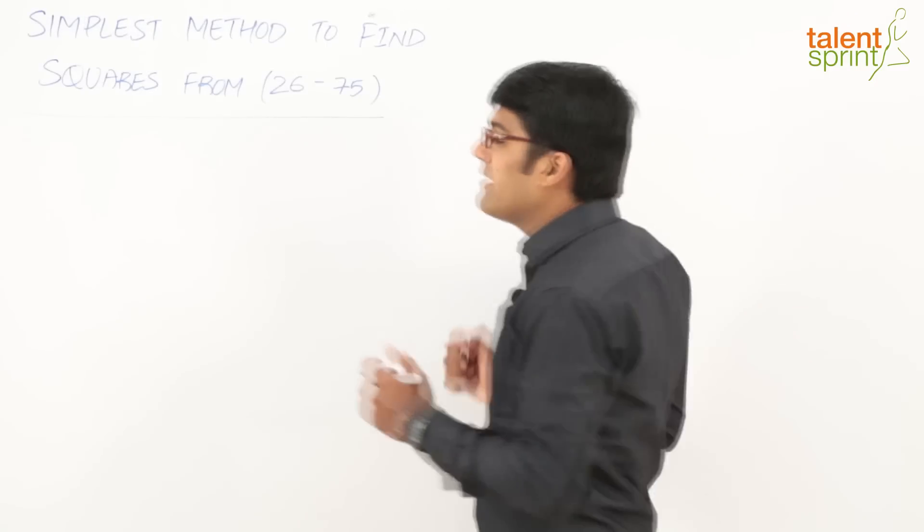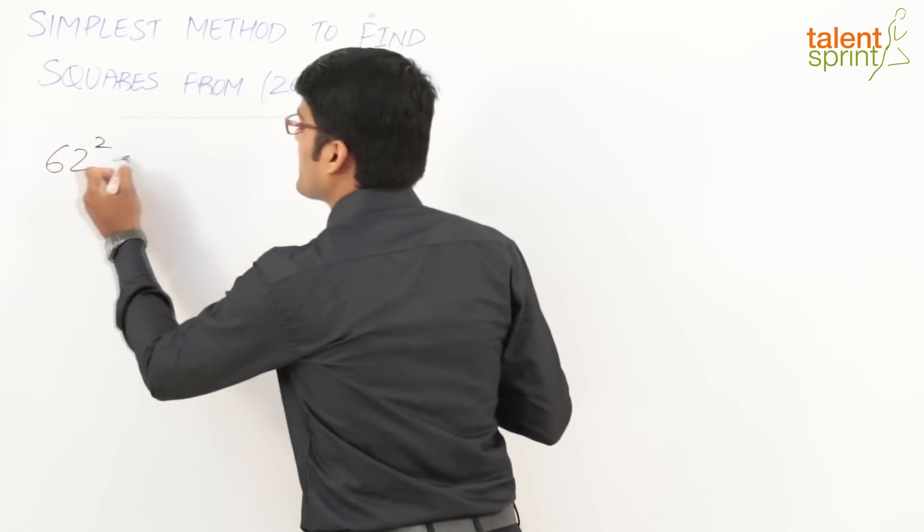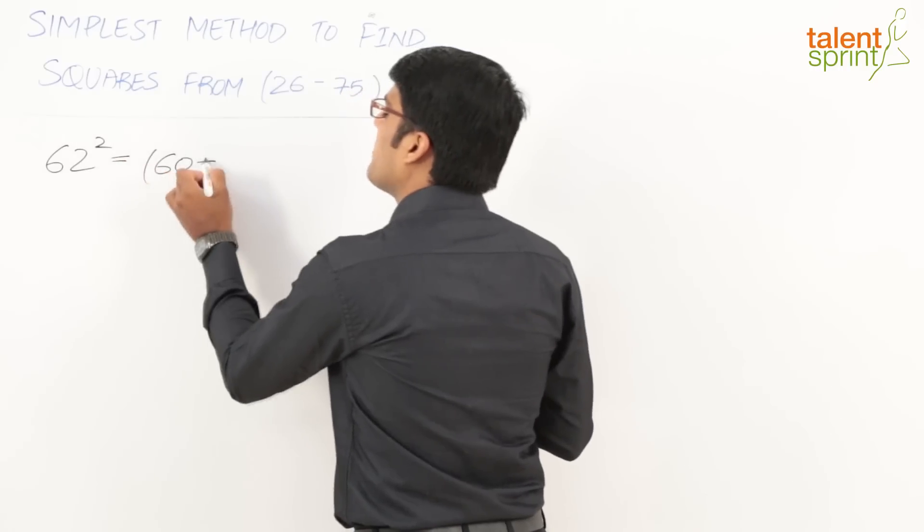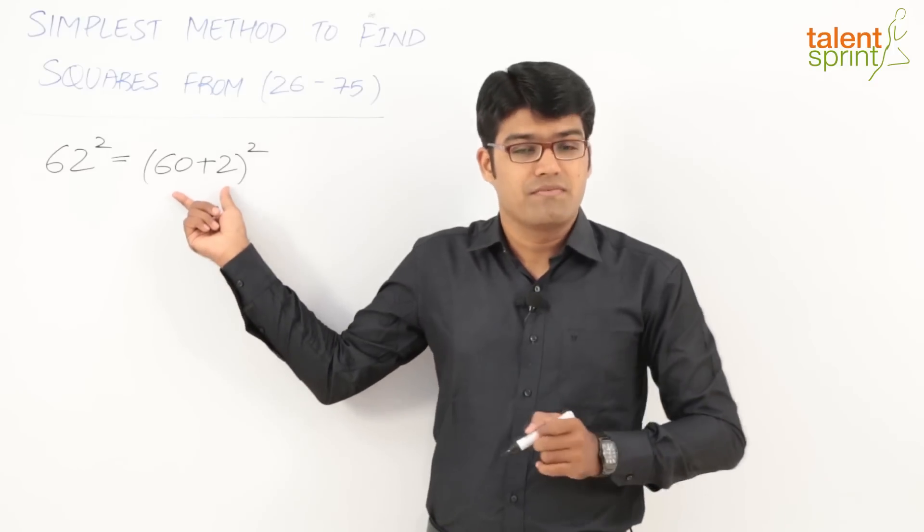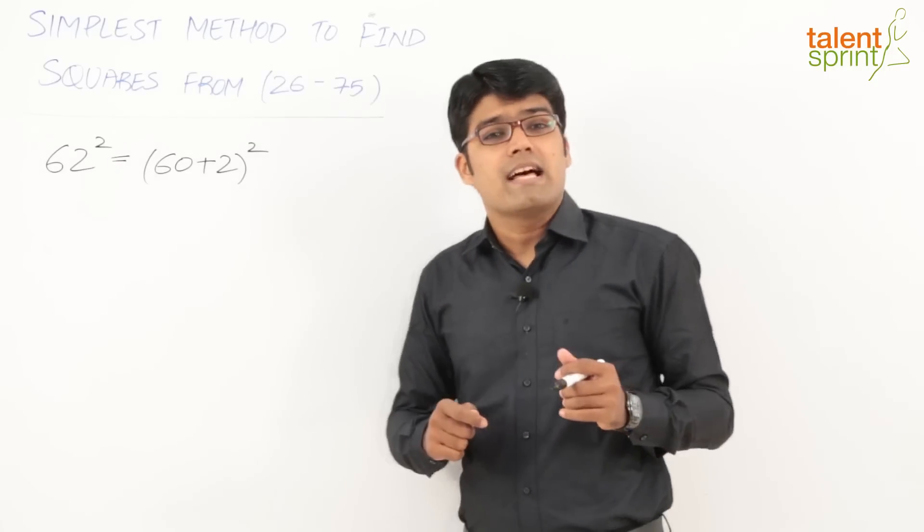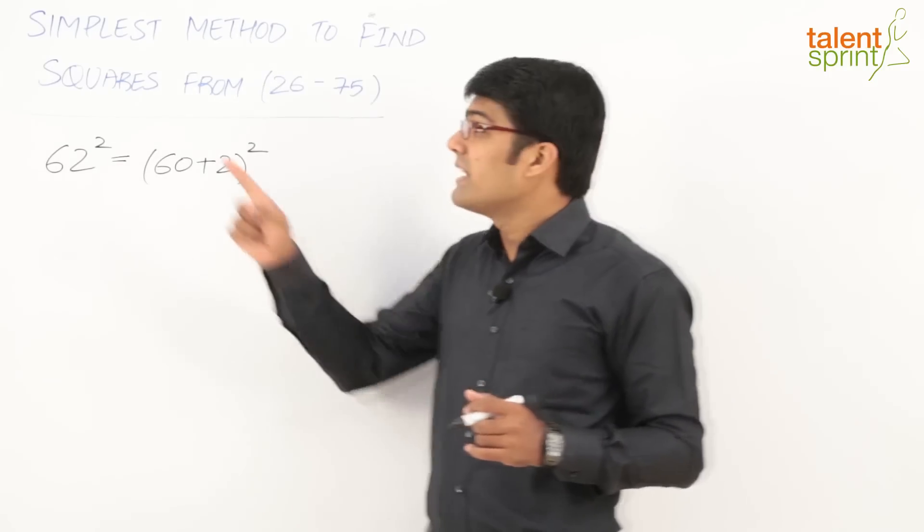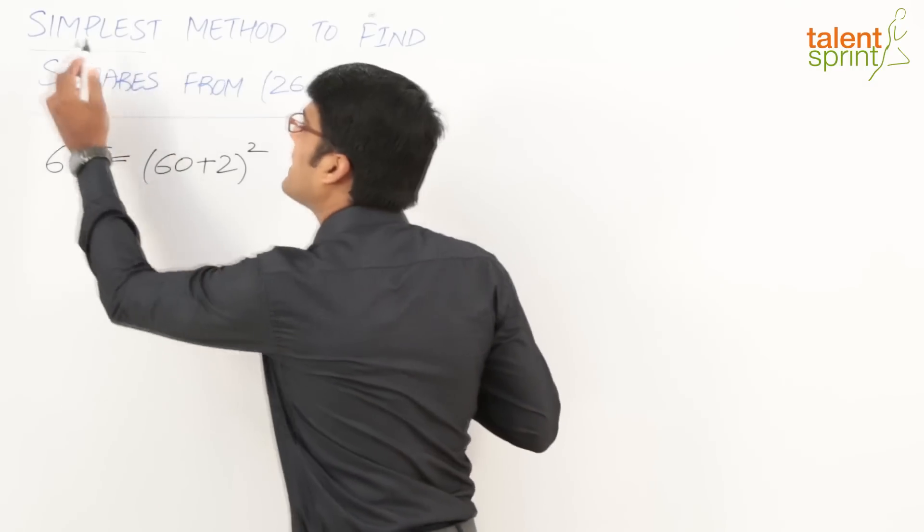Let us say we have to calculate the square of 62. Now a simple way of doing it would be to break it as (60 + 2)². As you see, we are using (a + b)² expansion, which is a² + 2ab + b². So that is a simple way of getting the answer. But our idea is to get the answer in the simplest way, the simplest method that we are looking at.